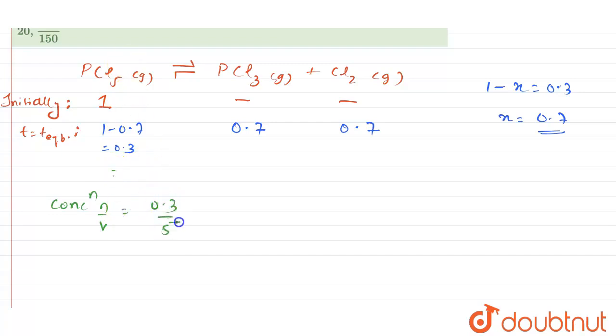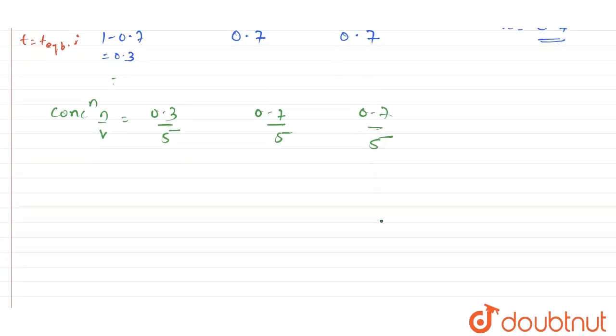The concentration will be 0.3 divided by 5 because the volume is 5 liters. For PCl3 it will be 0.7 divided by 5, and for Cl2 also 0.7 divided by 5.